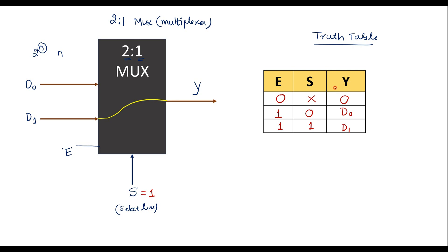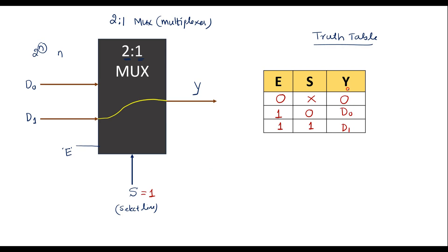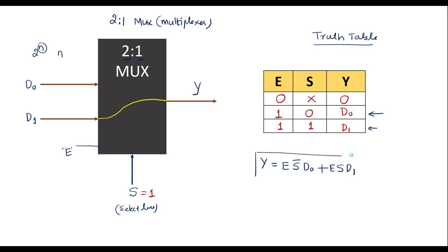Now with the help of the truth table, let me write the boolean expression. The boolean expression is always written with respect to the output variable. For the first row where E=1 and S=0: Y equals E AND S-bar AND d0. For the second row where E=1 and S=1: plus E AND S AND d1. So the boolean equation of the 2-to-1 MUX is: Y = E·S̄·d0 + E·S·d1.